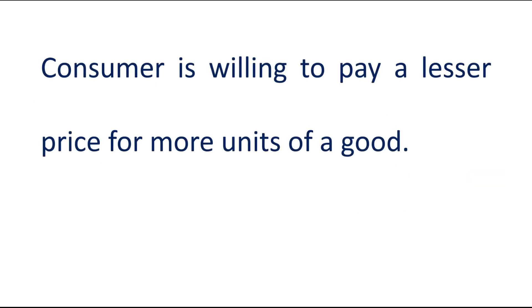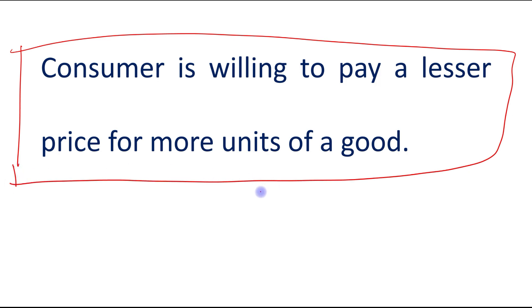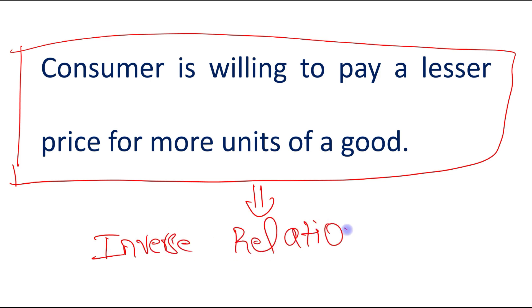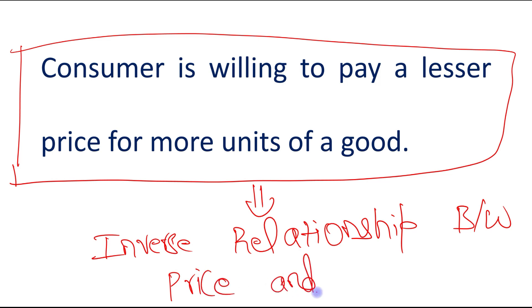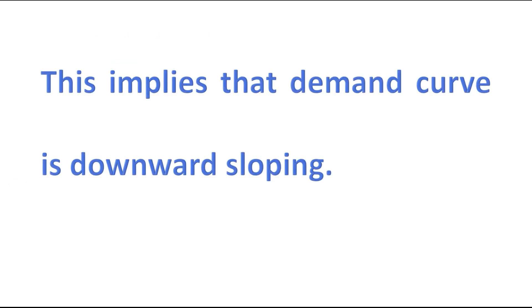The consumer is willing to pay a lesser price for more units of a good. This statement clearly states an inverse relationship between price and quantity demanded. And thus, this implies that the demand curve is downward sloping. This is how the law of diminishing marginal utility is a reason behind the downward slope of the demand curve.